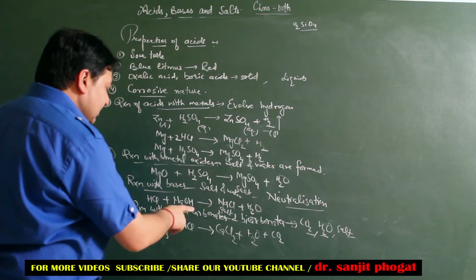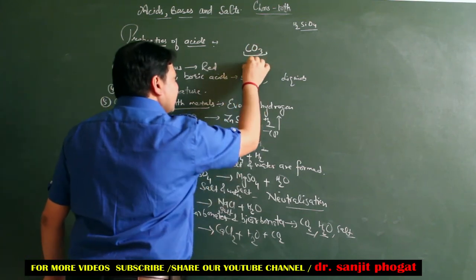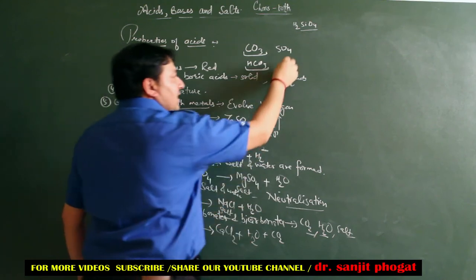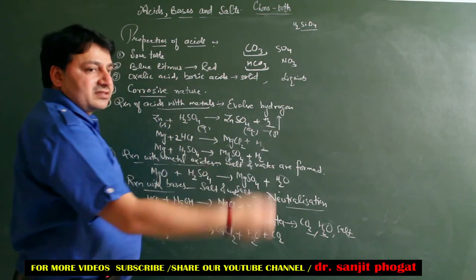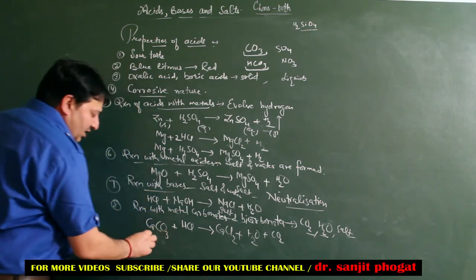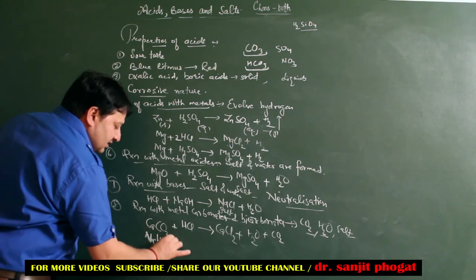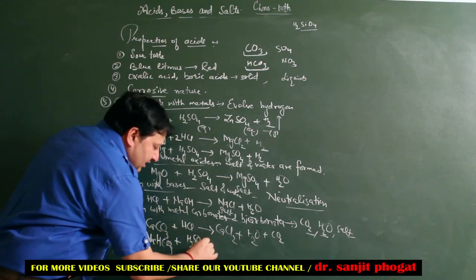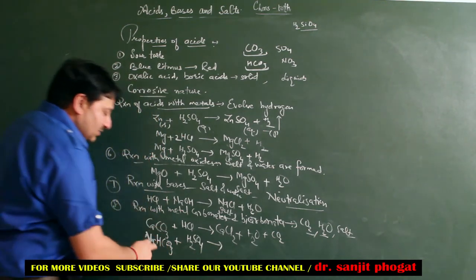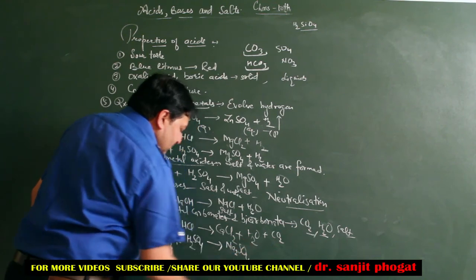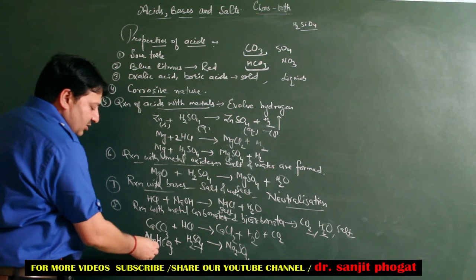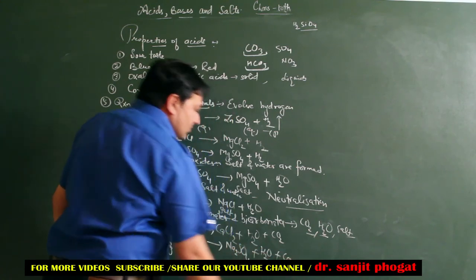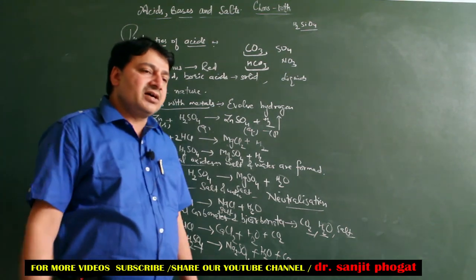Bicarbonate लें जैसे NaHCO3 Sodium Bicarbonate। याद रखें - CO3 Carbonate, HCO3 Bicarbonate, SO4 Sulfate, NO3 Nitrate। NaHCO3 के साथ H2SO4 मिलाएं तो Salt Na2SO4 plus H2O plus CO2 बनेगा। कुछ reactions balance नहीं कर रहा, आप खुद कर सकते हैं। तो Acids की यही main Chemical और Physical Properties हैं।